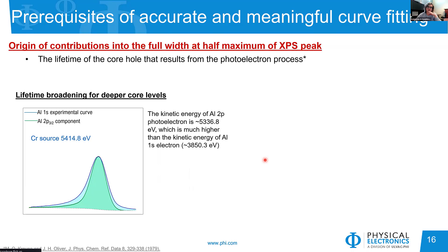The other contribution is in the width of the peaks — the FWHM. There are several parameters that contribute to peak width. The first is related to the lifetime of the photoemission electron process. If the electron is in deeper core levels, such as the 1s electron for aluminum, which is deeper than aluminum 2p and has smaller kinetic energy, it will have a wider width — they have a longer lifetime, and the spread contributes to larger peak width.